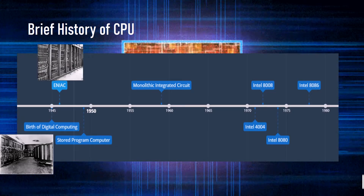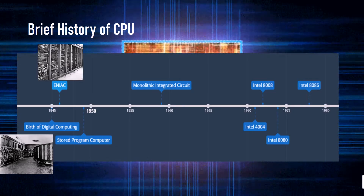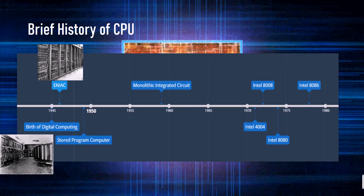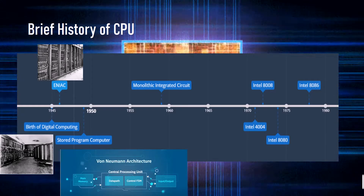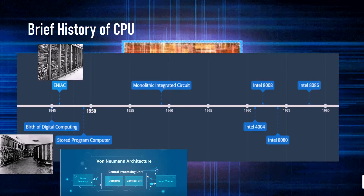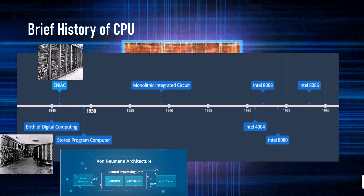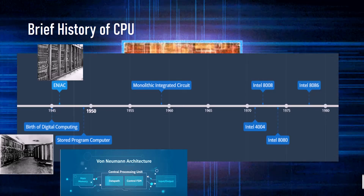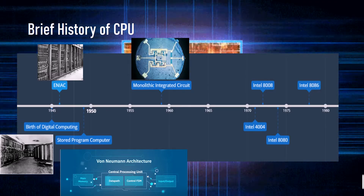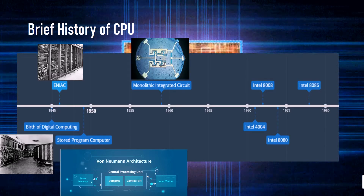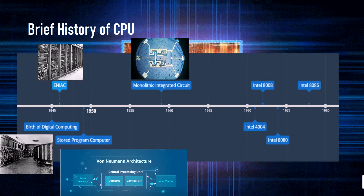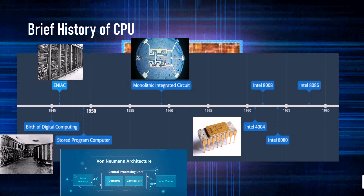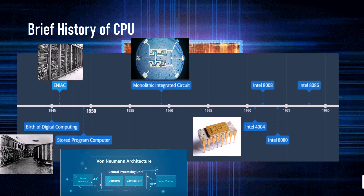Next, let us have a brief history of the CPU. On year 1945 is the birth of digital computing, followed by ENIAC or Electronic Numerical Integrator and Computer on year 1946. In the late 1940s, the stored program computer was developed by John von Neumann.